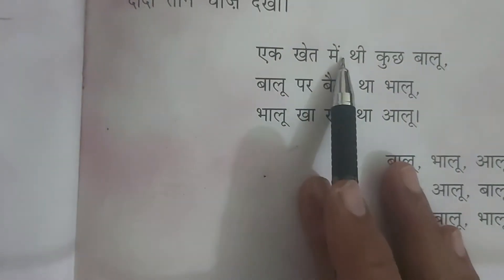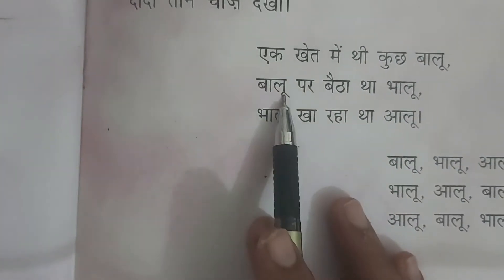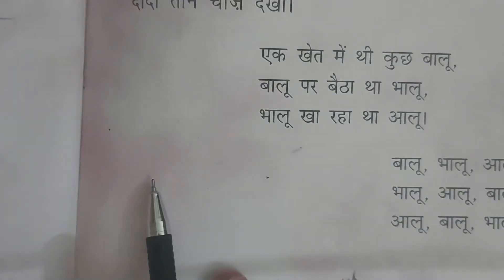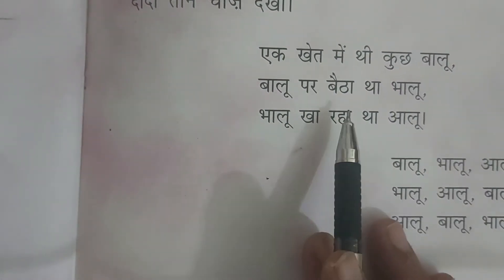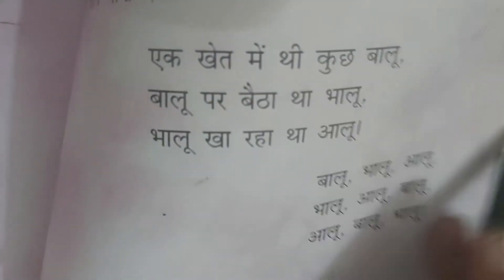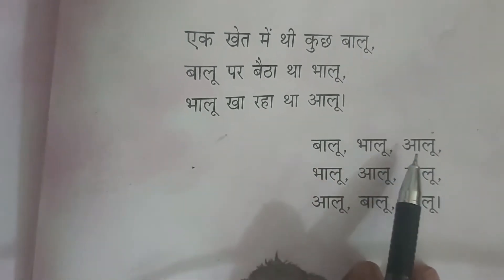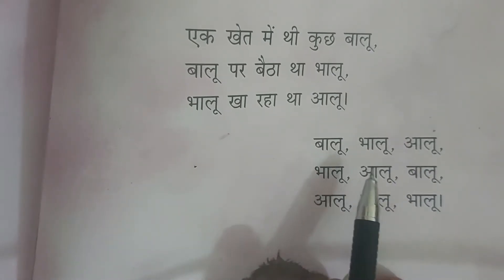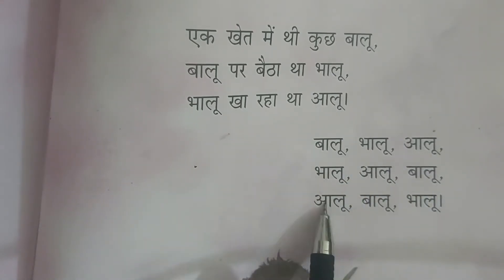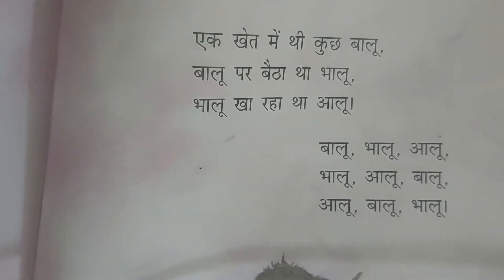एक खेत में थी कुछ बालू, बालू पर बैठा था भालू, भालू खा रहा था आलू। बालू, भालू, आलू — ये tongue twister है।